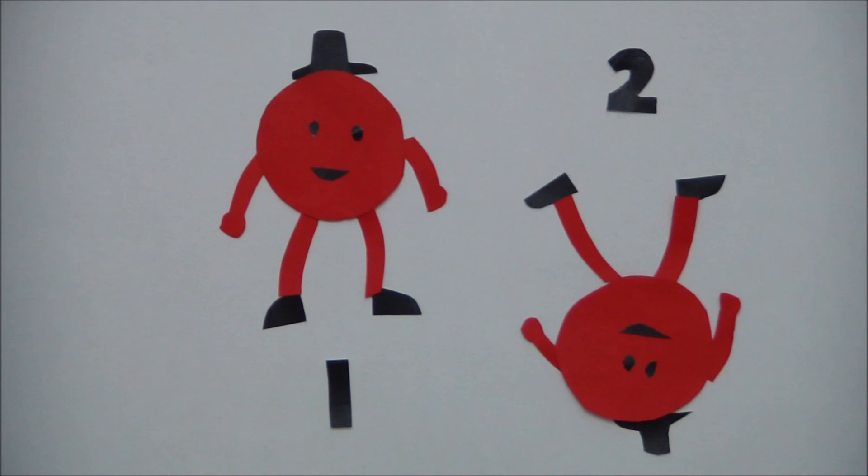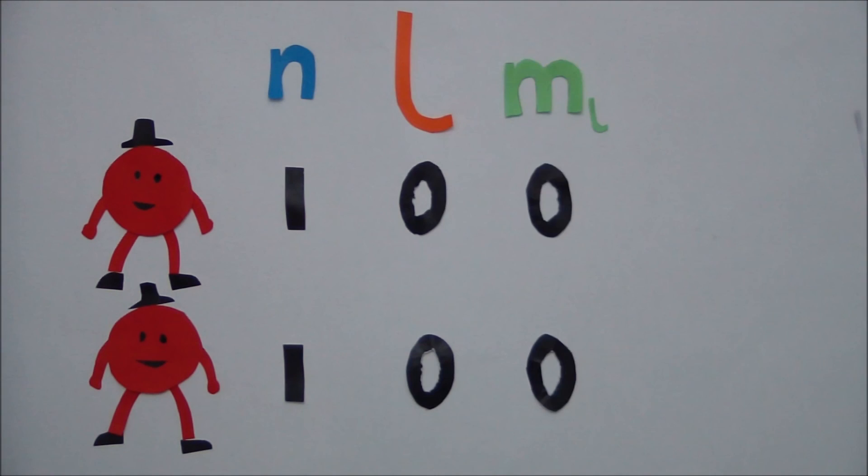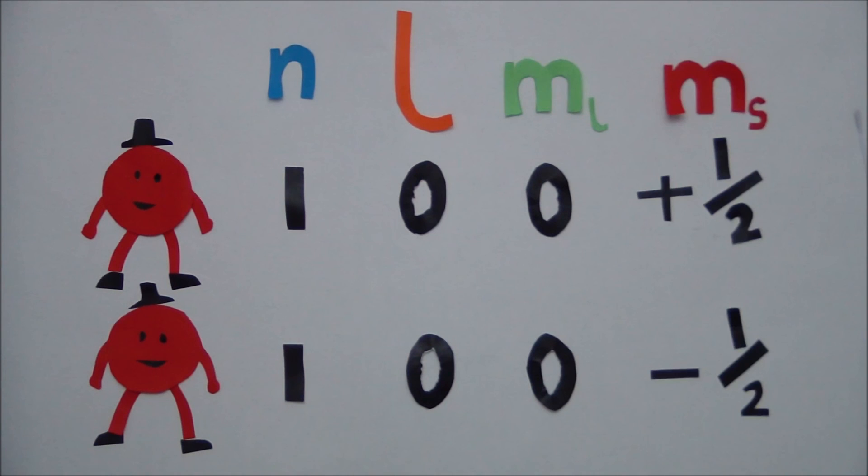This means that there are only two possible values for m sub s within a single orbital. That is, if one electron has a spin of plus a half, then the other must have a spin of minus a half. From this we can see where the exclusion principle works. No more than two electrons can share the same first-degree quantum number values, and if two electrons do share the same first-degree quantum number values, they must have opposite values for the fourth.